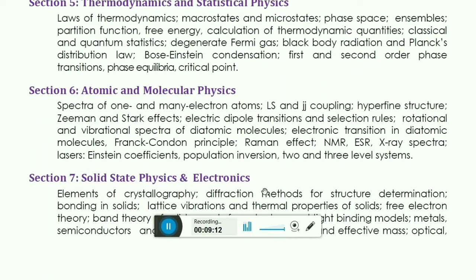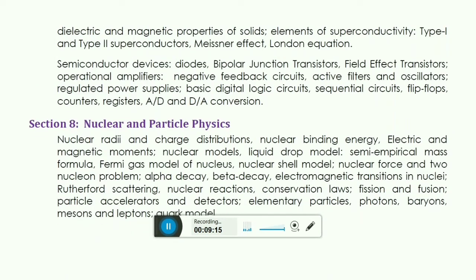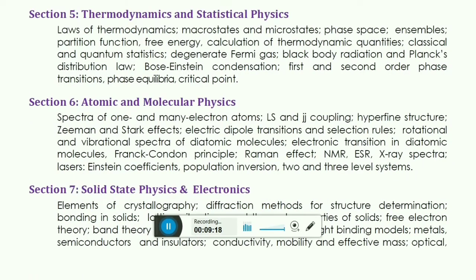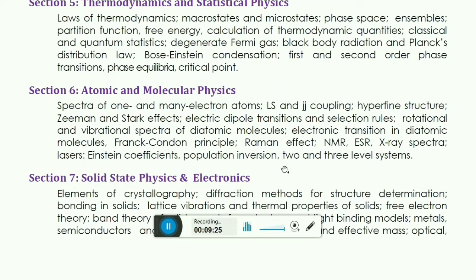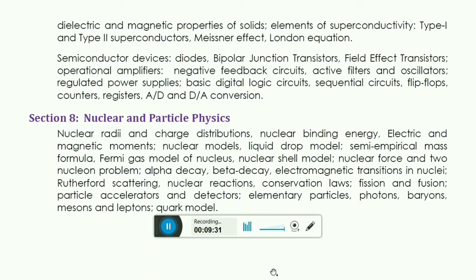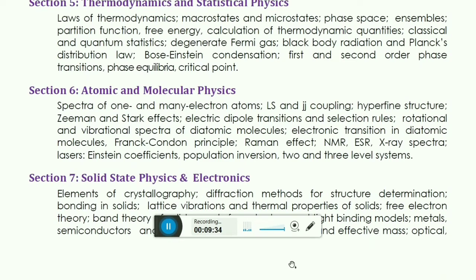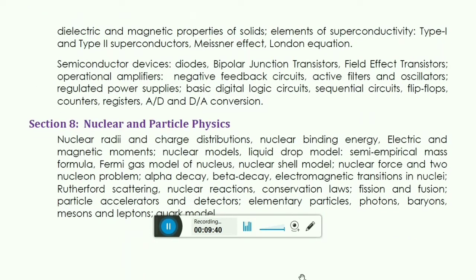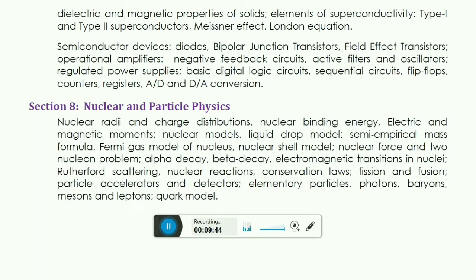The next section is solid state physics and electronics. In solid state physics, elements of crystallography, diffraction methods for structure determination, bonding in solids, lattice vibration, thermal properties of solids, free electron theory, band theory, and then many more things. Tight binding models, metals, semiconductors, effective mass, optical, dielectric and magnetic properties of solids. You may get occasionally one or two questions from these sections. And the most important thing of solid state physics is the elements of superconductivity, Type 1 and Type 2 superconductors, Meissner effect, London equations. You really need to prepare it well to get one or two questions on superconductivity.